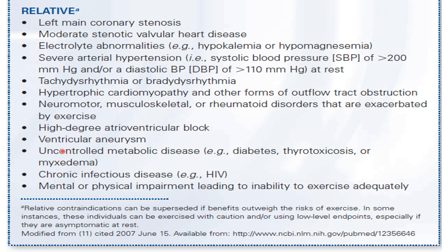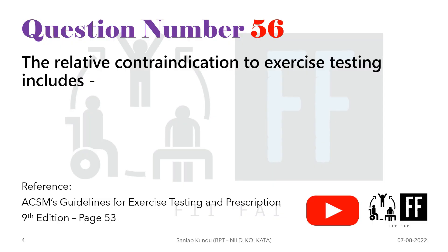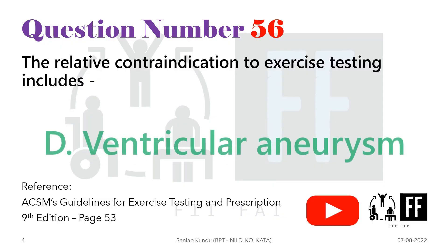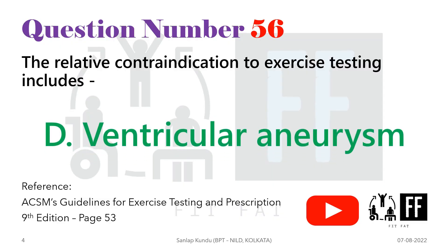Here you can see the relative contraindication to exercise testing is ventricular aneurysm, which is option D. To know more about this, you can go through the SASM guidelines book.